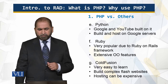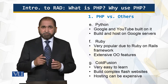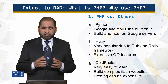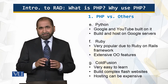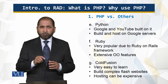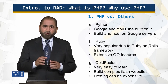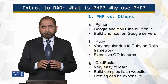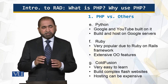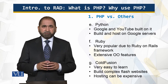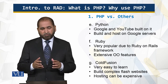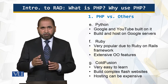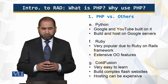Ruby is very popular as compared to other web technologies because of the Ruby on Rails framework, and it has extensive object-oriented features. Object-oriented features were a stumbling block for PHP until version five was released, so that is a strength of Ruby — its object-oriented features.